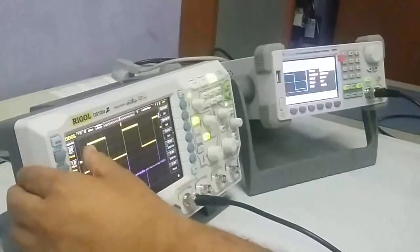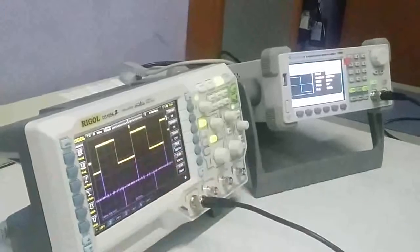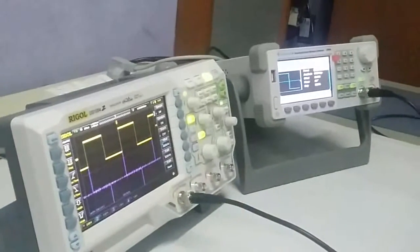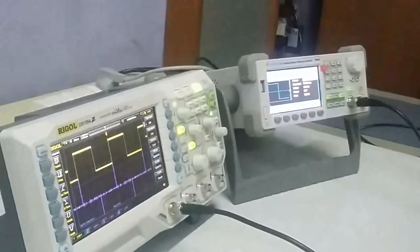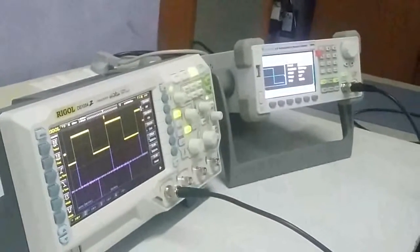So this is a spike for the rising edge of the square wave and this is the spike for the falling edge of the square wave. So this is how we can demonstrate the differentiation function by using the Z series DSO.